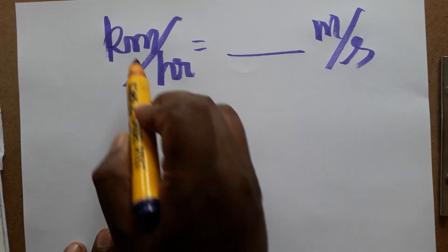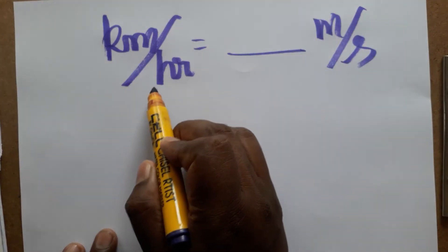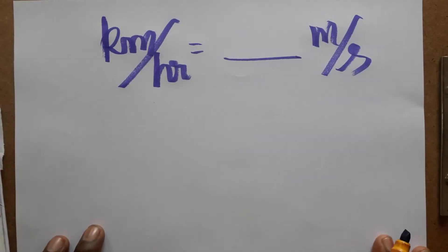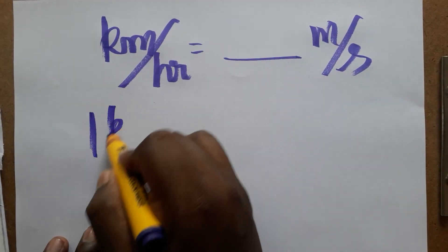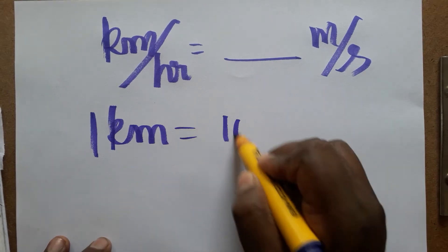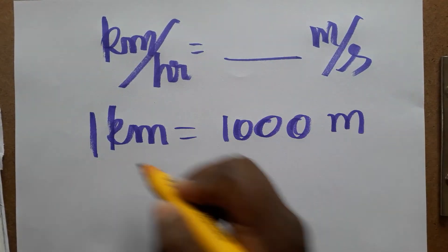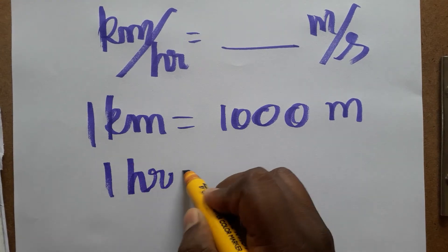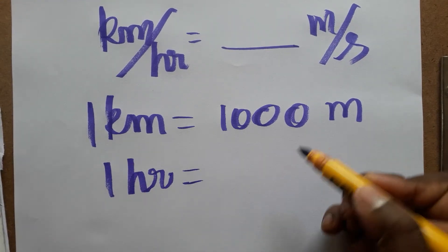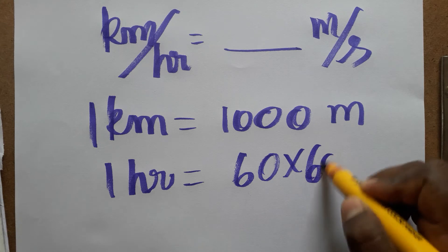Hello students, today we are going to learn how to convert kilometer per hour to meter per second. If you like my channel, please subscribe. One kilometer is equal to a thousand meters, and one hour is equal to 3600 seconds — that is, 60 into 60 seconds.